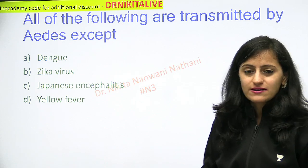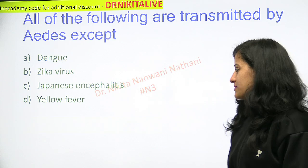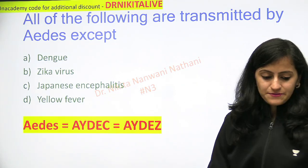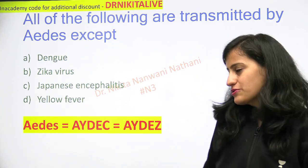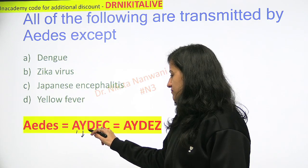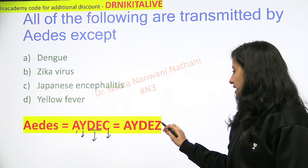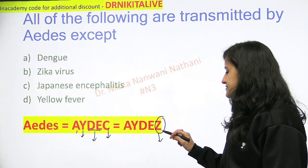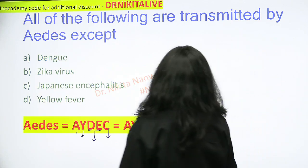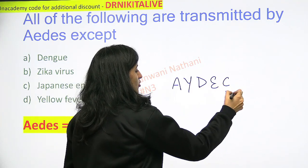This is a very frequently asked question, so an easy trick to remember is: we write Aedes as A-Y-D-E-C or A-Y-D-E-Z. So that tells us — A for Aedes, Y is yellow fever, D is dengue, E is part of the spelling, C is chikungunya, and Z is Zika virus. That is how we spell Aedes for our mnemonic: A-Y-D-E-C or Z.